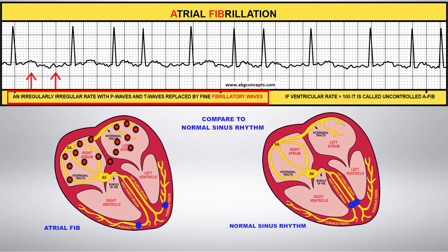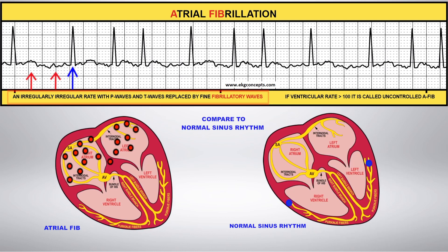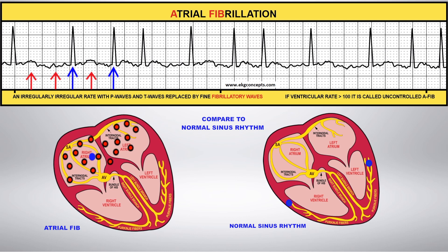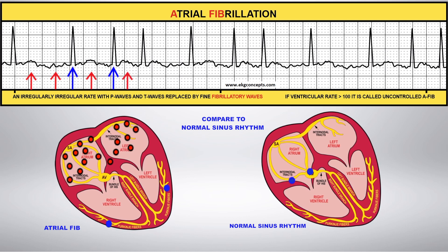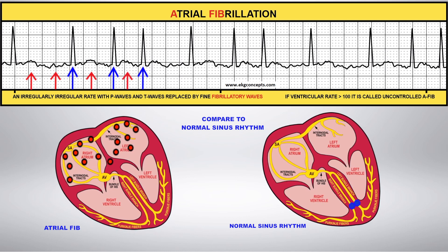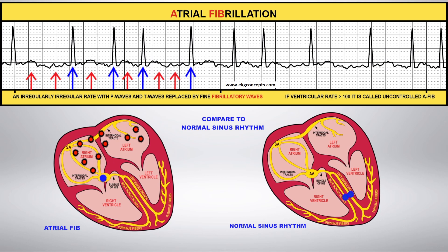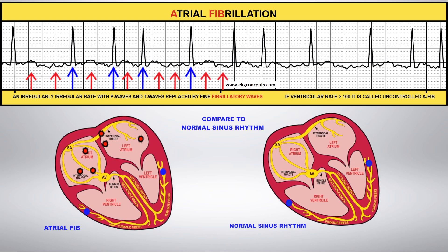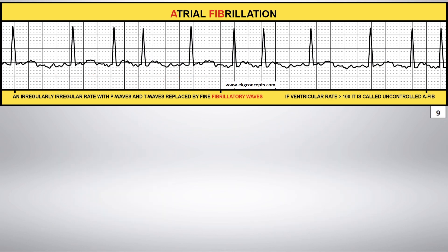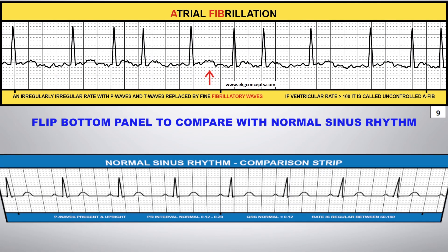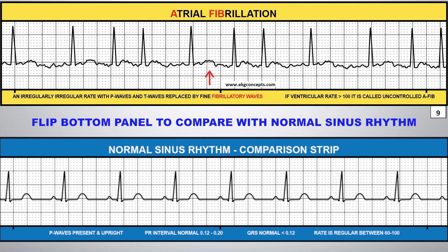Compare this to normal sinus rhythm. Atrial fibrillation is the most common dysrhythmia in the world. You can flip the comparison strip on the bottom panel to compare this rhythm to normal sinus rhythm.